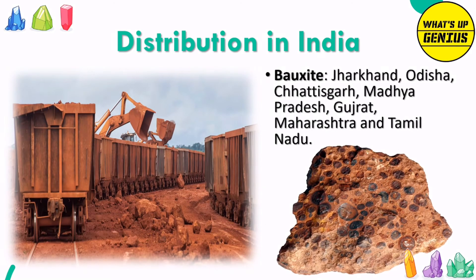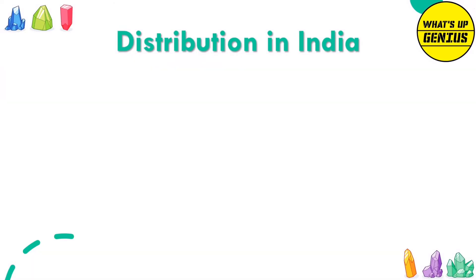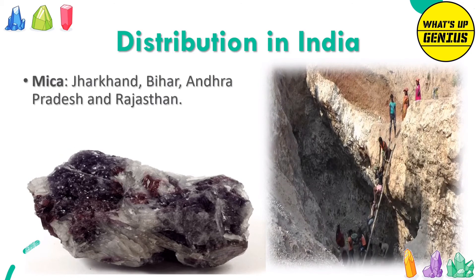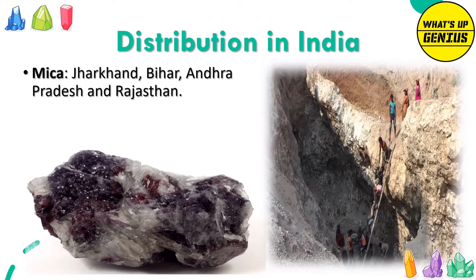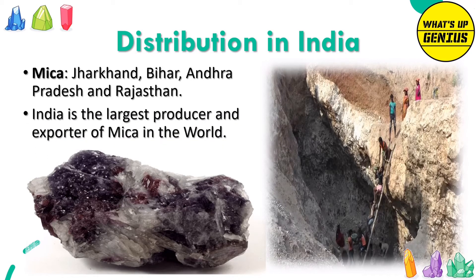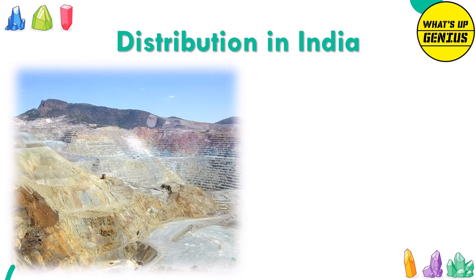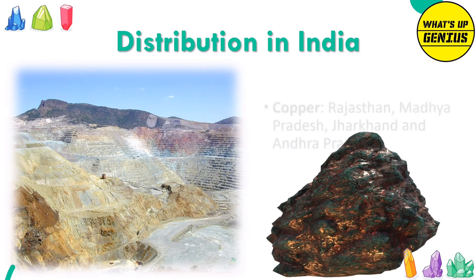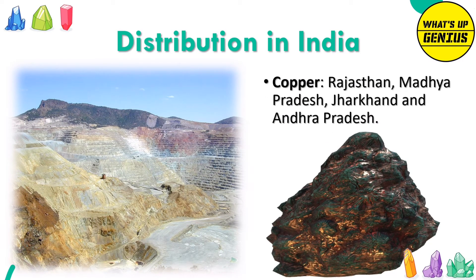Bauxite is found in Jharkhand, Orissa, Chhattisgarh, Madhya Pradesh, Gujarat, Maharashtra and Tamil Nadu. Mica is found in Jharkhand, Bihar, Andhra Pradesh and Rajasthan — India is the largest producer and exporter of mica in the world. Copper is found in Rajasthan, Madhya Pradesh, Jharkhand and Andhra Pradesh.